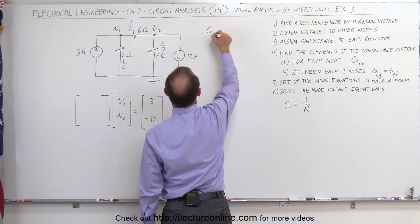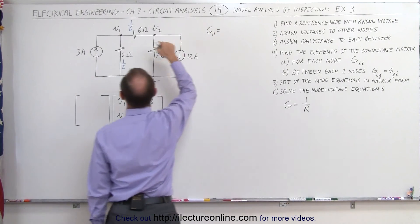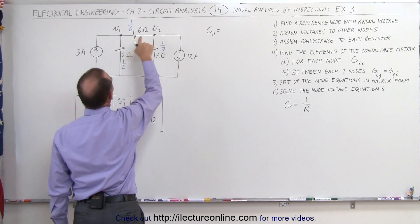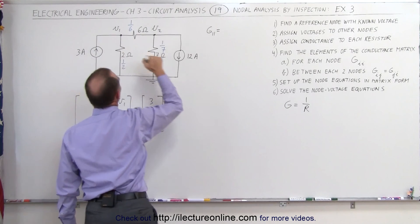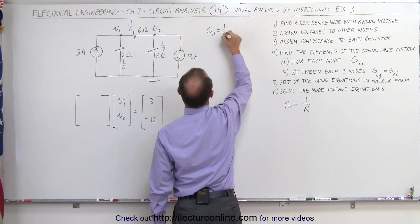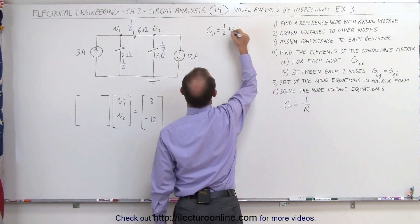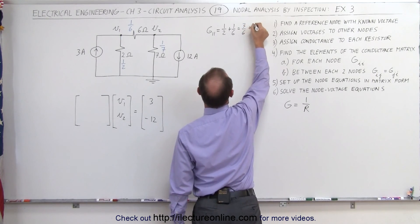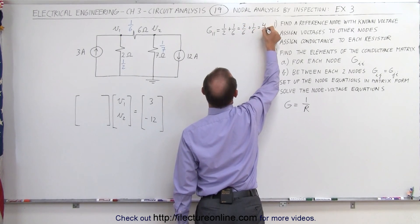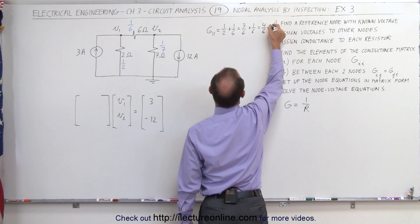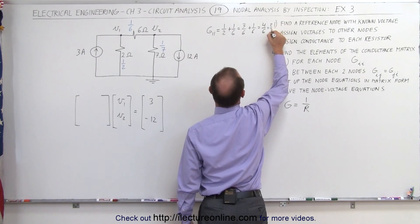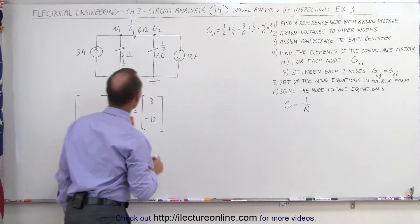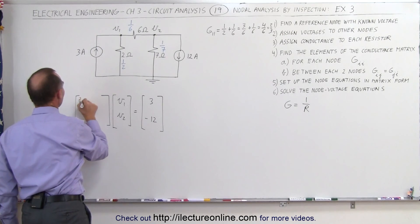G11 is the sum of the conductances directly connected to V1. I see two of them, I see 1 half and 1 over 6, so that's 1 half plus 1 over 6, common denominator is 6, that's 3 over 6 plus 1 over 6, which is 4 divided by 6, which is 2 thirds. I'm running out of room there, but there you can see it, 2 thirds, that would be the element right here, 2 divided by 3.